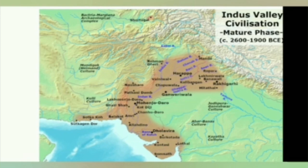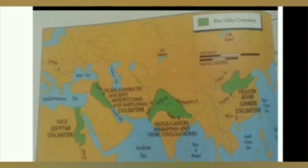Like the Indus Valley Civilization, all important early civilizations developed on the banks of rivers. These are called river valley civilizations. There were four major river valley civilizations: the Indus Valley Civilization, the Chinese Civilization, the Egyptian Civilization, and the Mesopotamian Civilization.